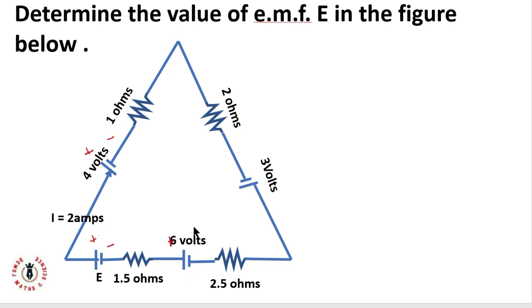We observe that E and my 6 volt are all in the same direction, but in opposite direction to my 4 volt, but in the same direction also to the 3 volt. So my algebraic sum of my voltage will be E plus 6 plus 3 minus 4.